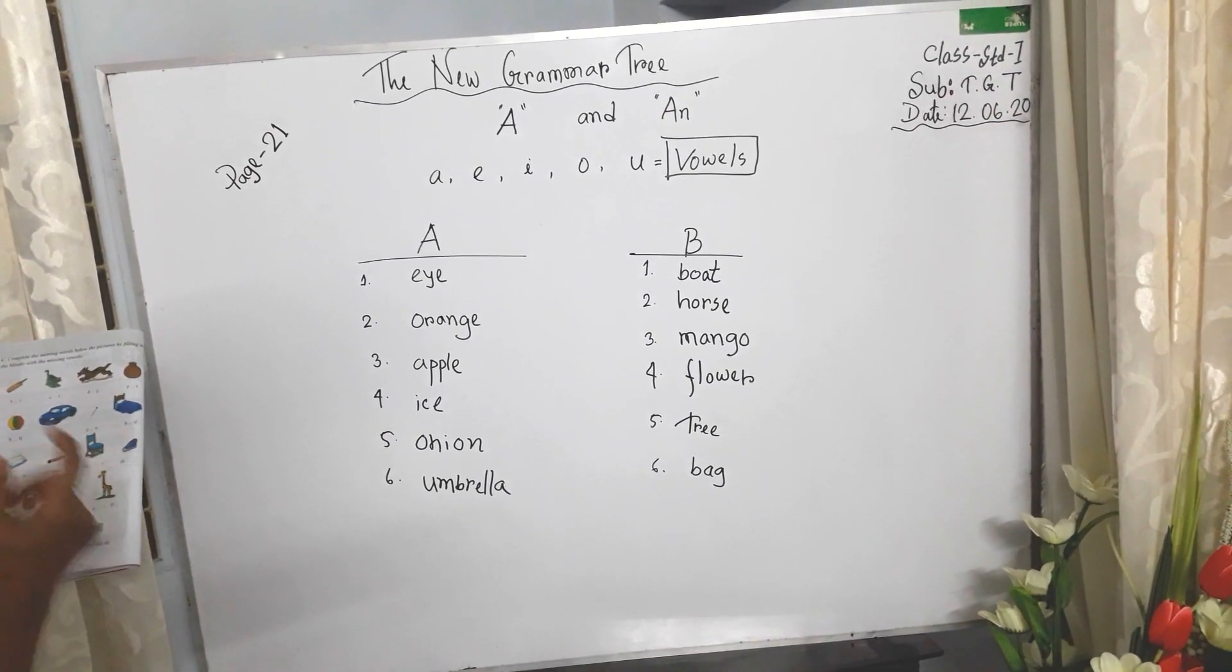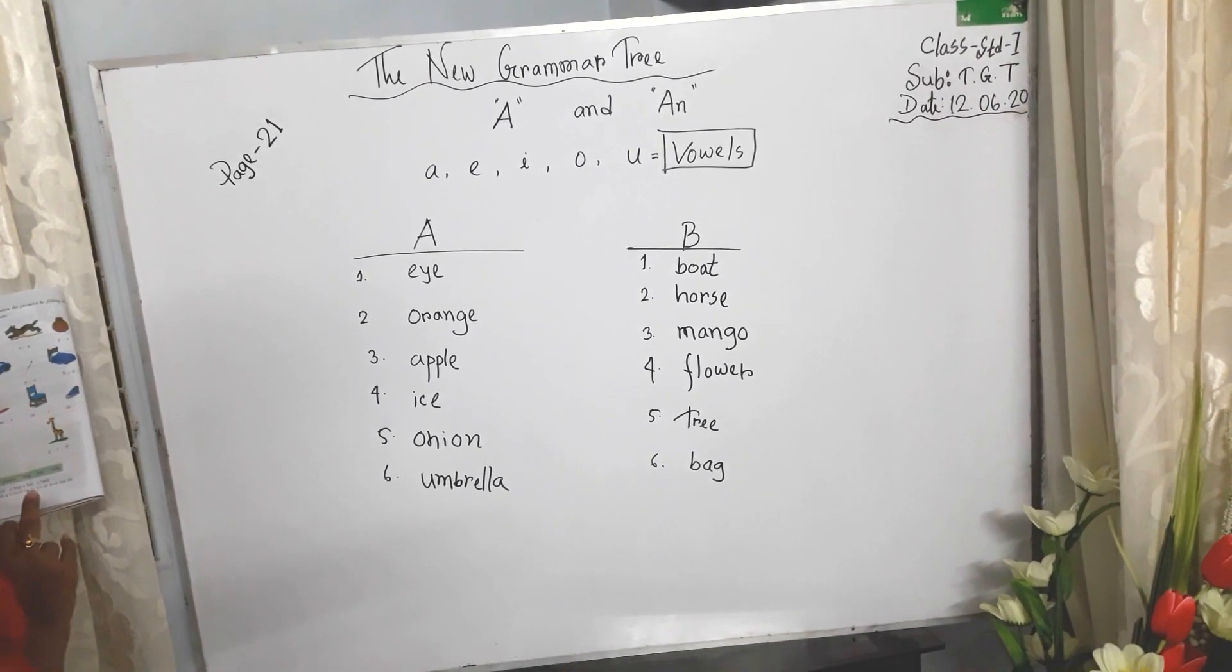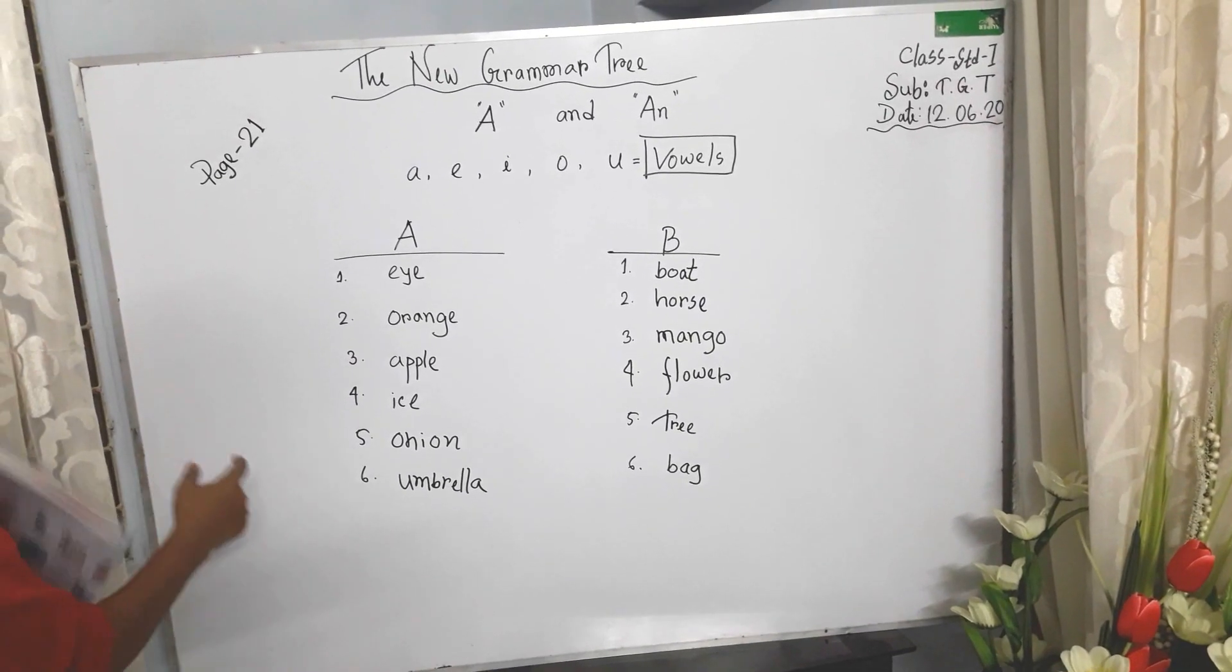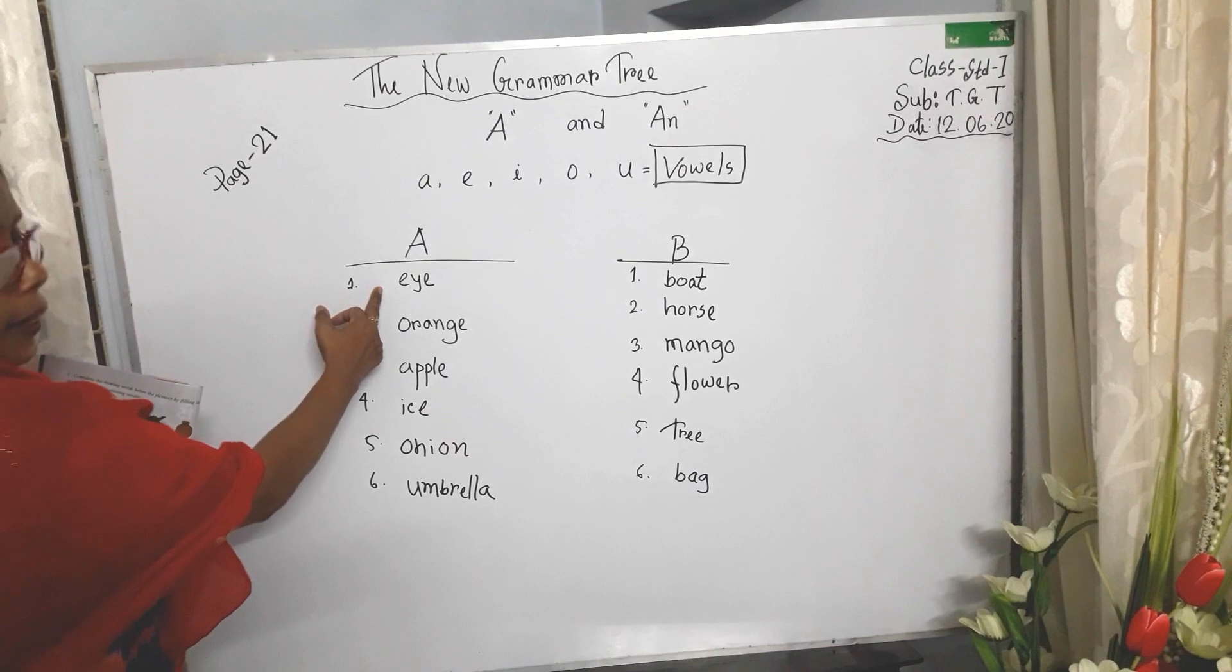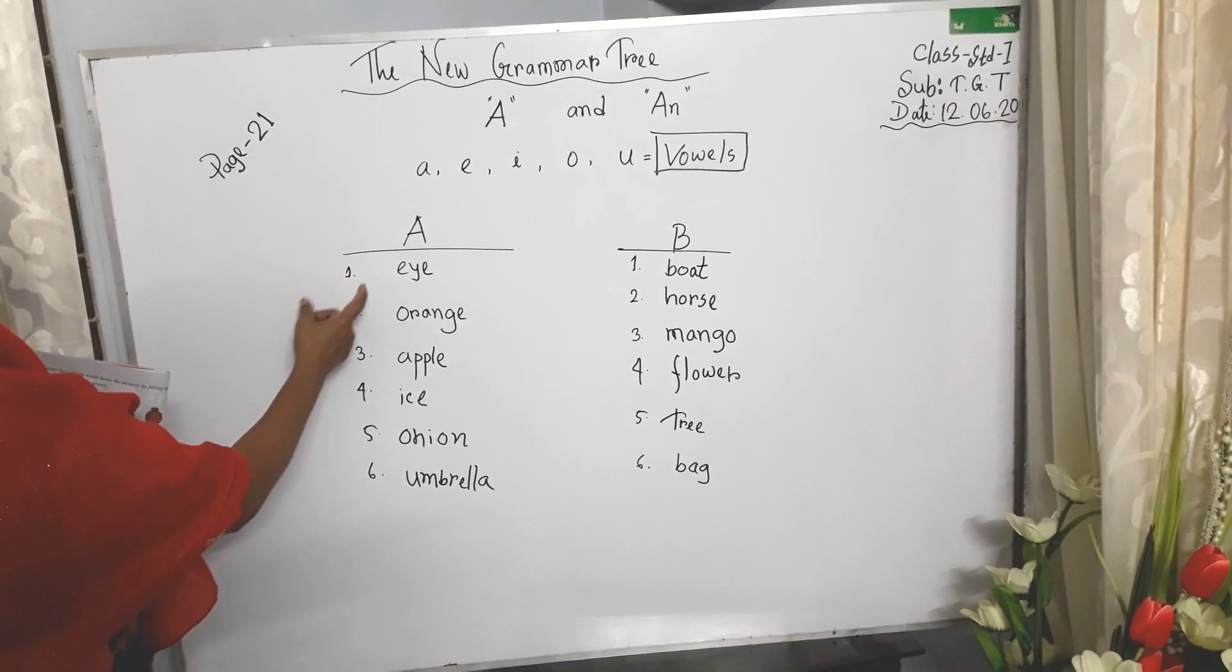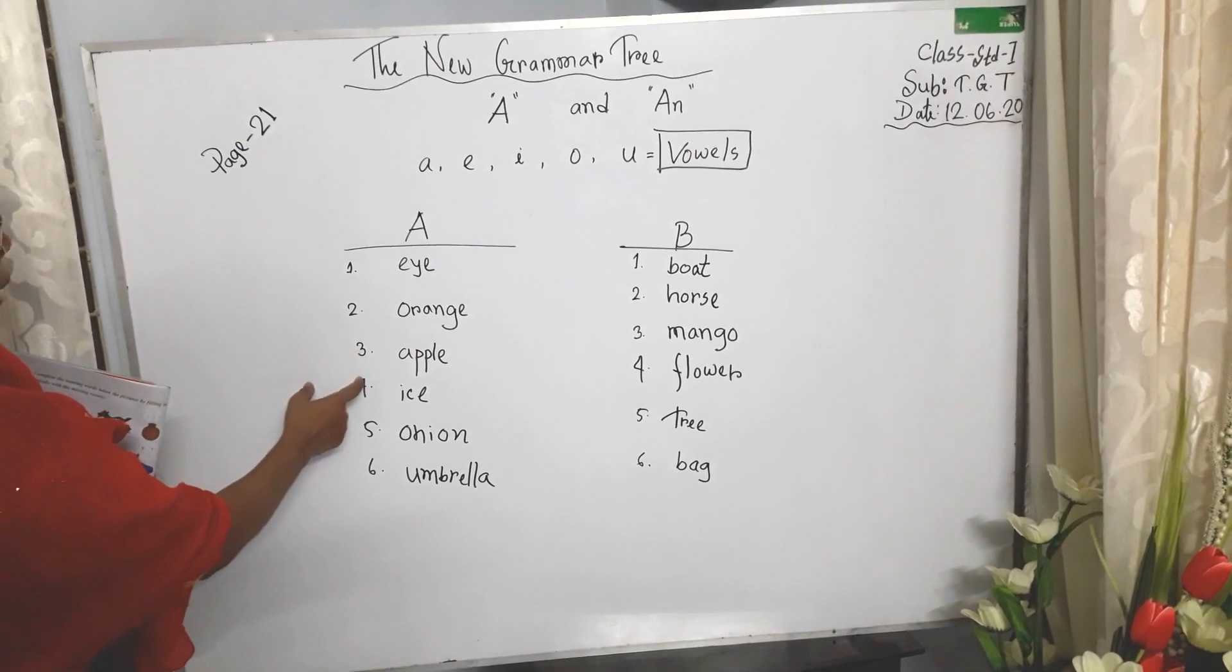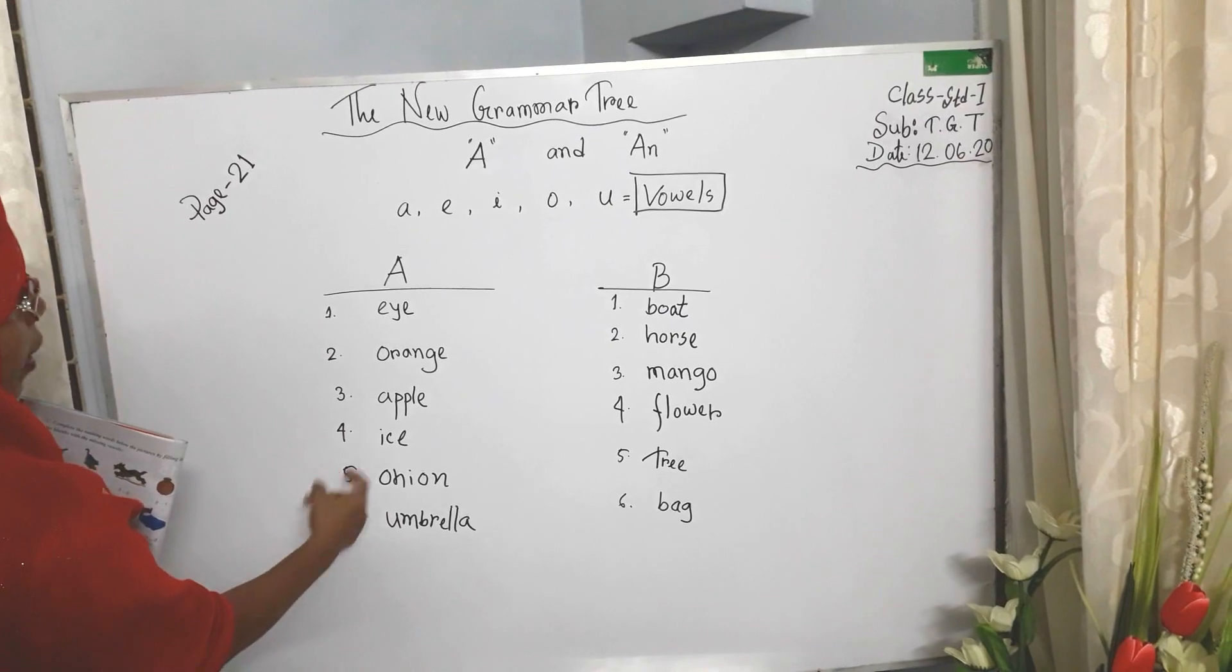But if a word begins with a vowel A, E, I, O, or U, we use AN before the word. Like: we use an eye, an orange, an apple, an ice, an onion, an umbrella.